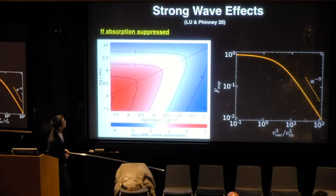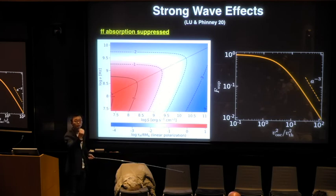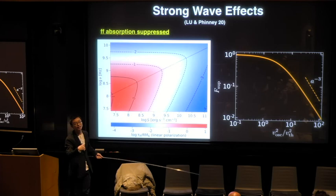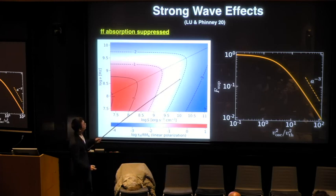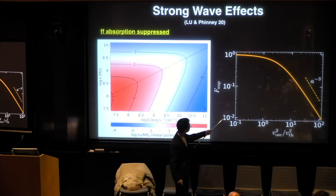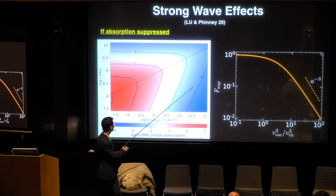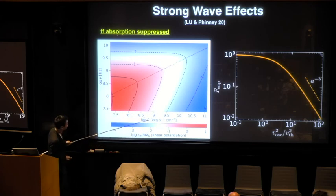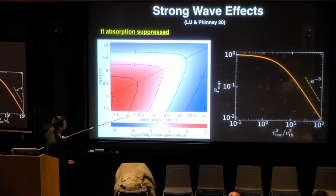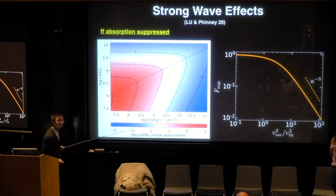So another thing that you would expect, this is a very simple thing, is that the free-free absorption is suppressed, because electrons now are oscillating at speed much higher than their thermal speed. Let's say for 10^4 Kelvin, your thermal speed is 10^4 kilometers per second. Right now, for strong wave effects, the oscillating speed can be much higher than your thermal speed. So you see there's a strong suppression, which roughly goes as a^-3, of the free-free absorption. This is just to show, for a given flux, or a given luminosity, you see that as you go to lower and lower frequencies, the, initially the optical depth increases, and then the optical depth drops.